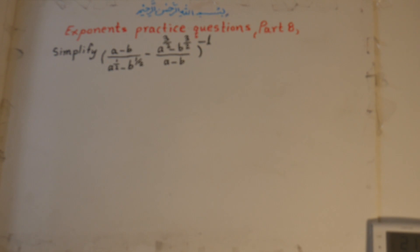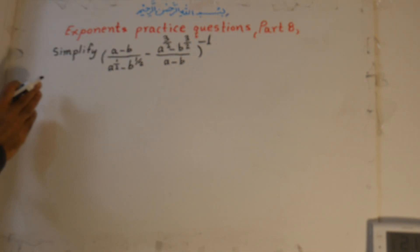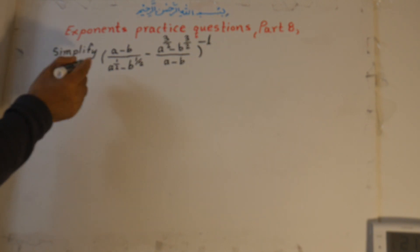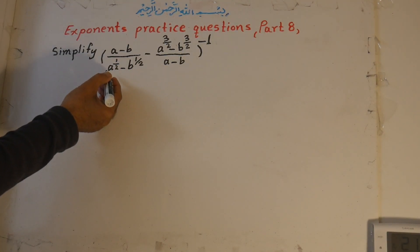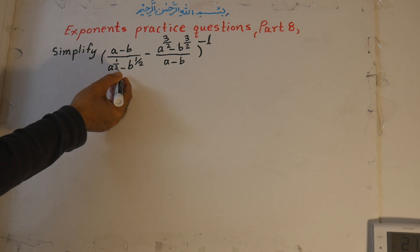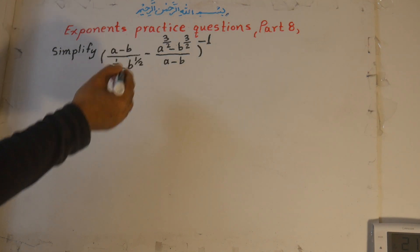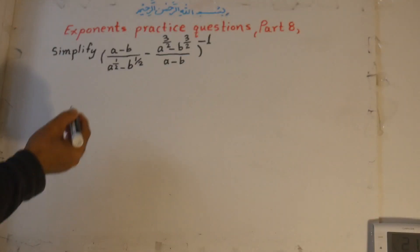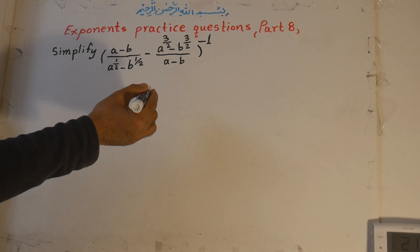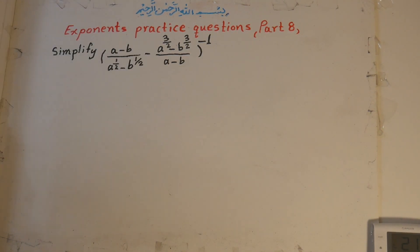Hi there, welcome to mathematics class. The topic of our lesson is exponents practice questions, part 8 or the last part. Simplify: (a minus b) over (a to the power of 1/2 minus a to the power of 3/2 minus b to the power of 3/2) over (a minus b), all to the power of negative 1.